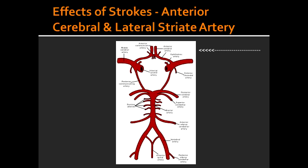Define hemiparesis. Hemiparesis is the weakness on one side of the body. What is hemiplegia? Hemiplegia is the paralysis of one side of the body.